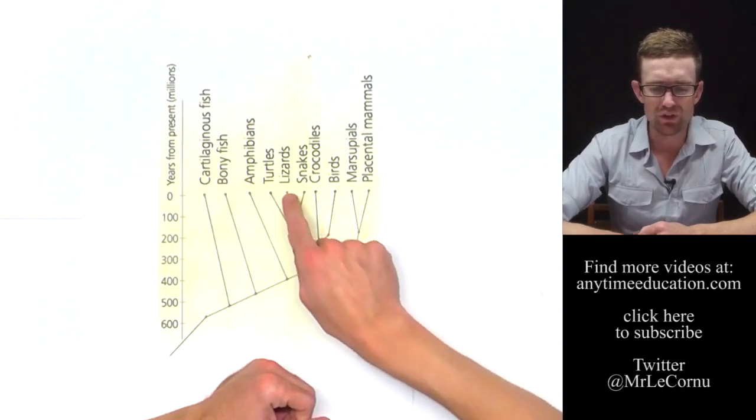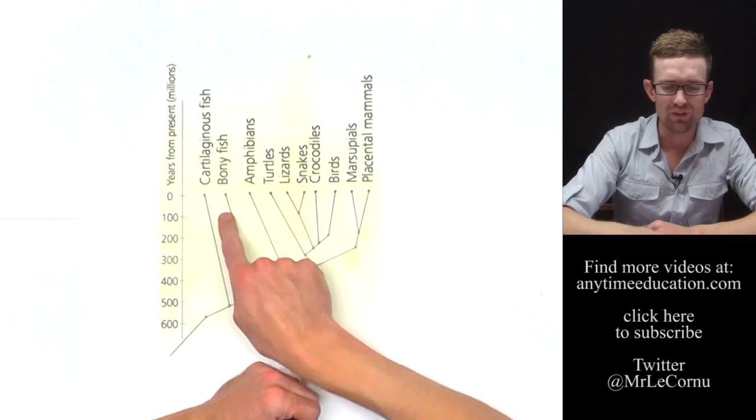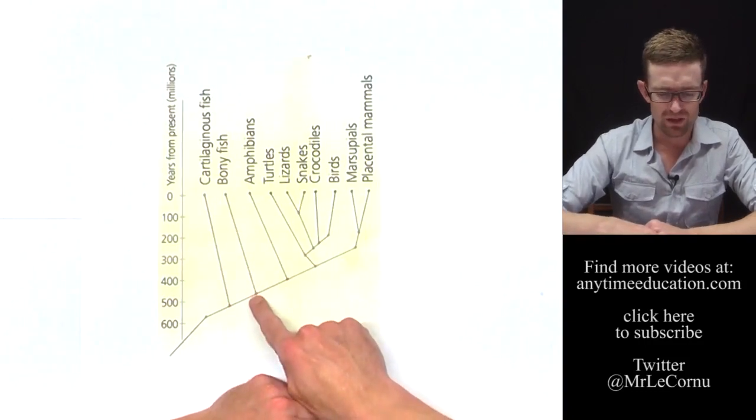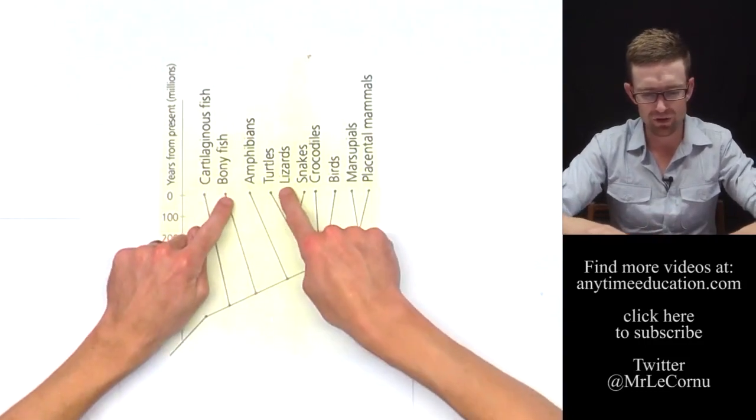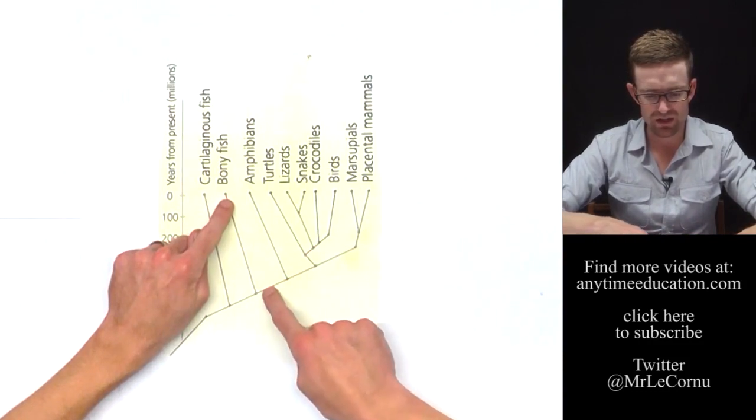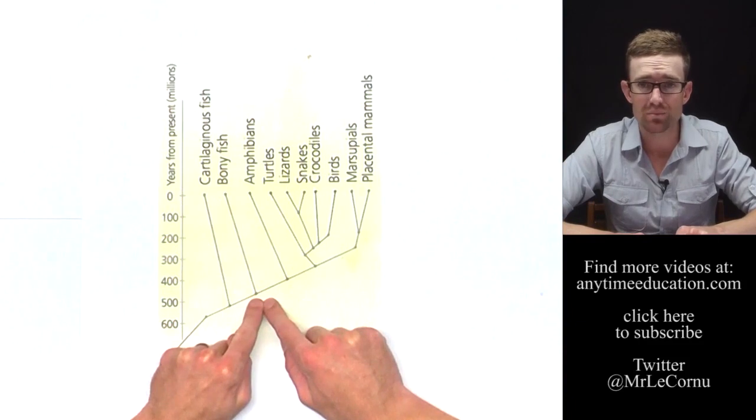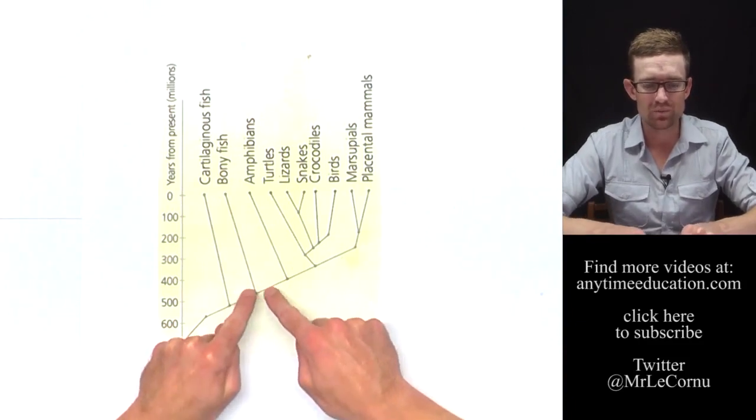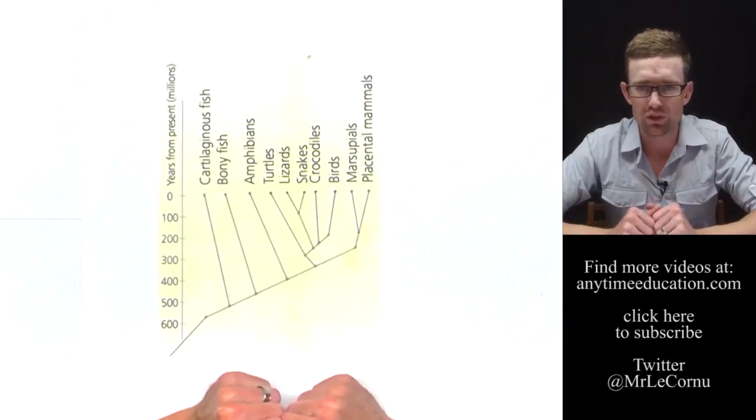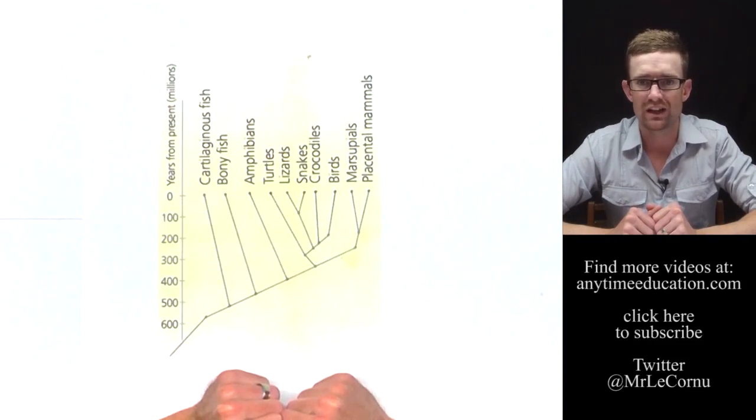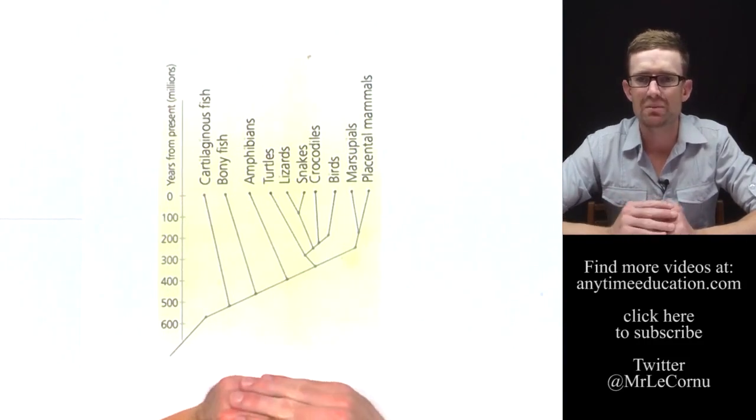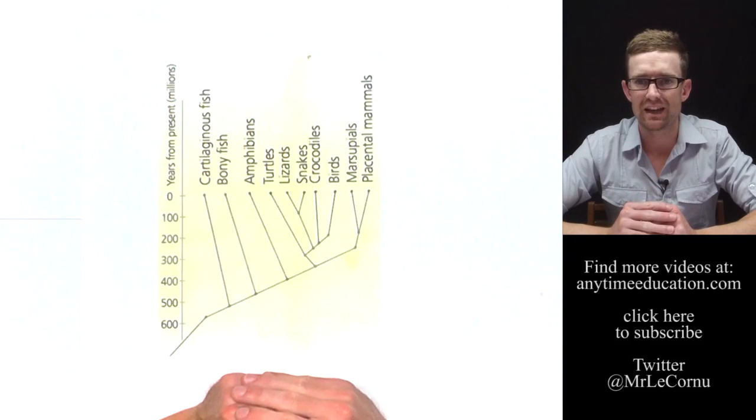However, if you take lizards and bony fish, for an example, they separated, we follow lizards back along this tree and follow bony fish back and we get to about 500 million years ago, which means their DNA has had a lot of time in order to change. And so there would be many more differences in their DNA sequences.